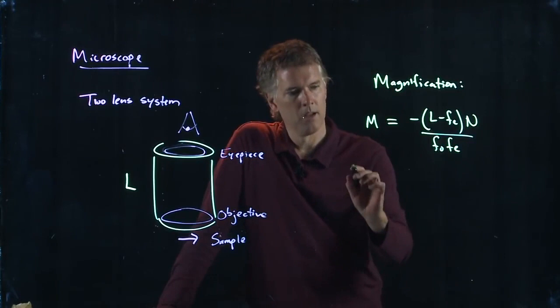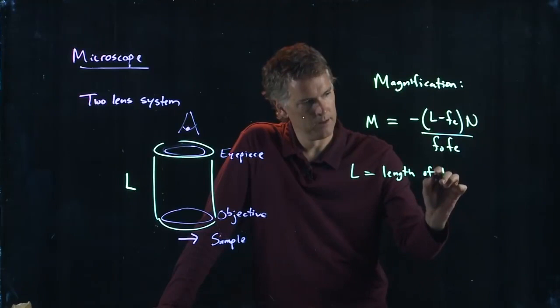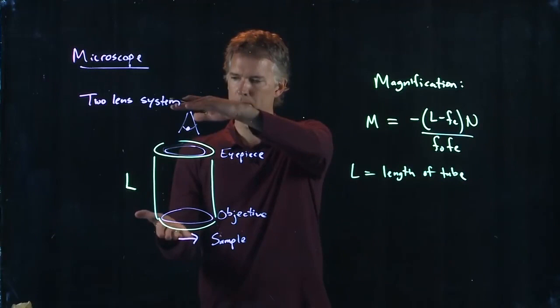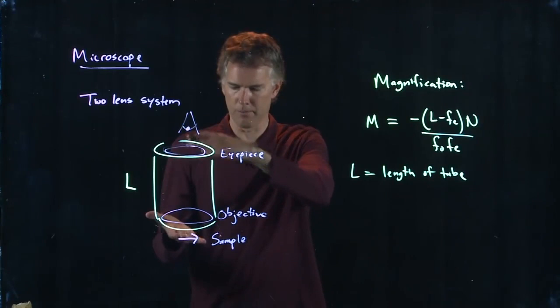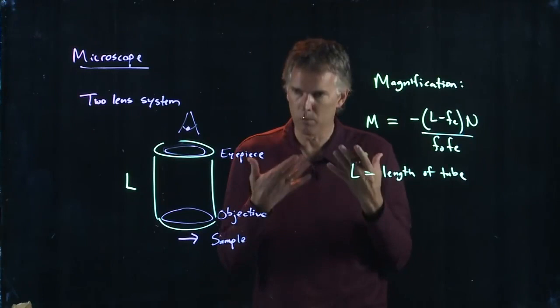What are these different things? L is that length that we just talked about. It's the length of this tube, and that's usually about 16 centimeters for a microscope. It's purely governed by how high is the table when you're sitting and looking down, what's a comfortable point for you to view it? That determines the length L of that tube.